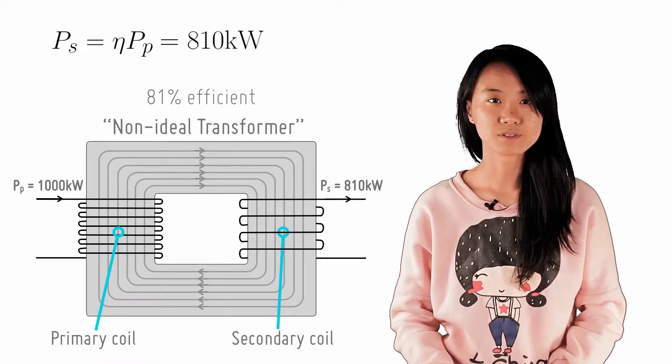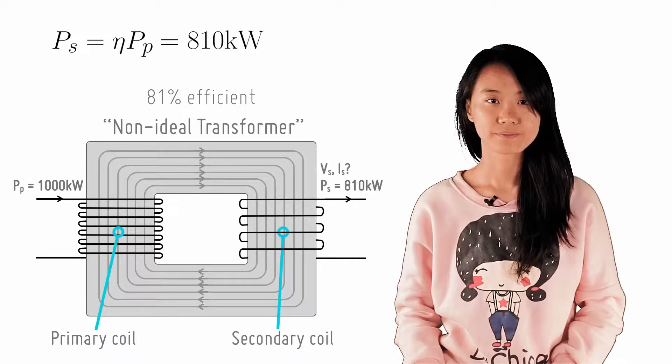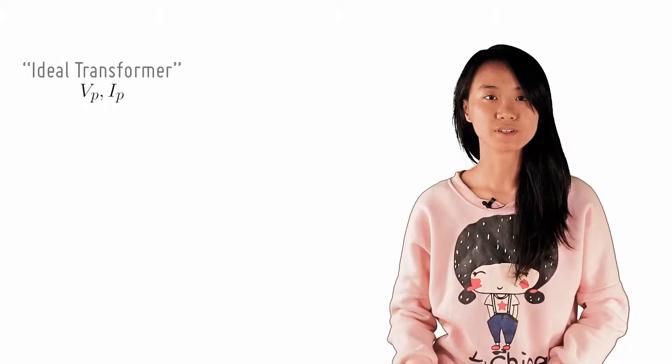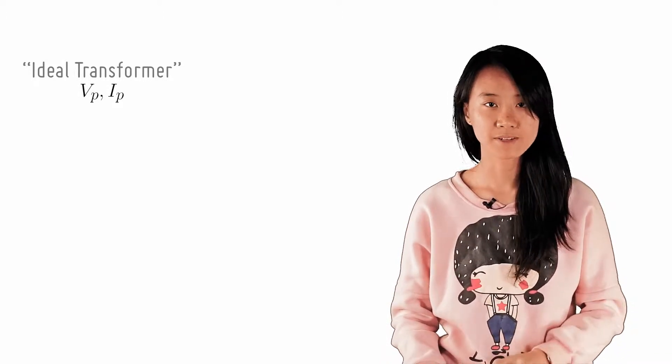Now that you know the power output of a secondary coil, what about the voltage or current output? Recall that in an ideal transformer, given the input peak voltage and peak current in the primary coil as vp and ip respectively,